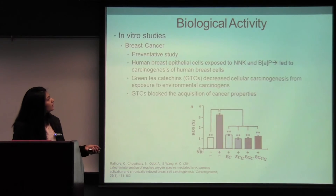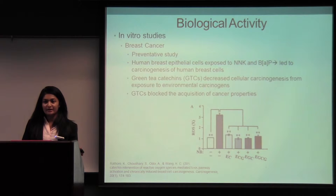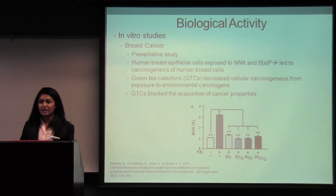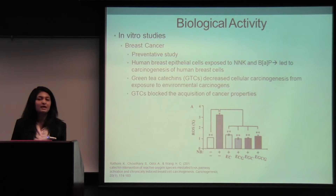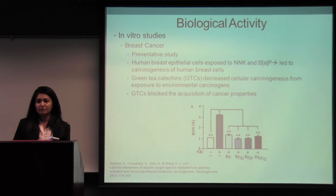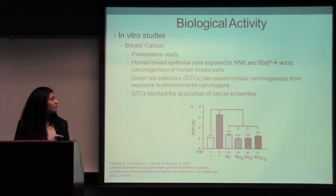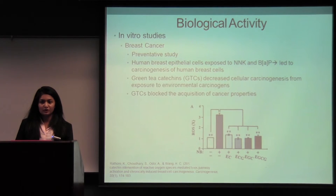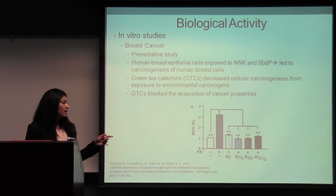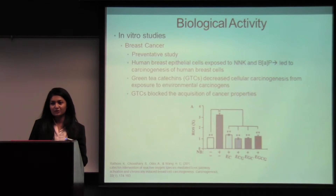Many of the clinical studies have focused on the preventive aspects of tea, and they've revolved around EGCG since it is the main catechin found in green tea. For example, there was a preventive study on breast cancer where they took immortalized, non-cancerous breast epithelial cells and exposed them to BAP and NNK — NNK is a carcinogen derived from tobacco, and BAP is also derived from tobacco but also found in the environment and diet. After those cells became cancerous, they were given either EGCG or a control treatment. Results showed decreased DNA damage, decreased production of reactive oxygen species, and decreased cell proliferation — blocking the acquisition of some cancer properties.